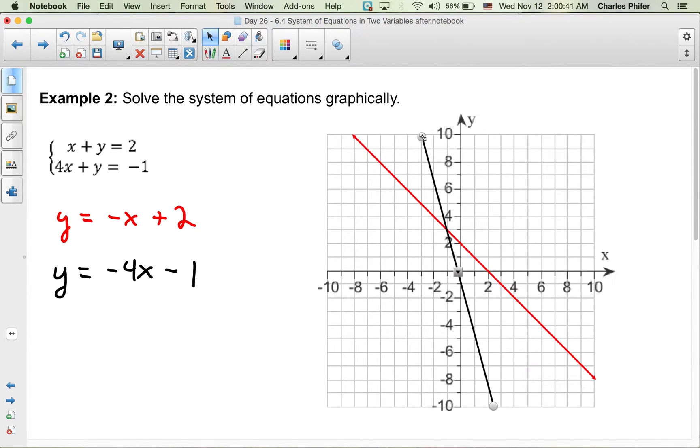So where did these two graphs cross? At the point (-1, 3). So we're saying that the solution here is (-1, 3).